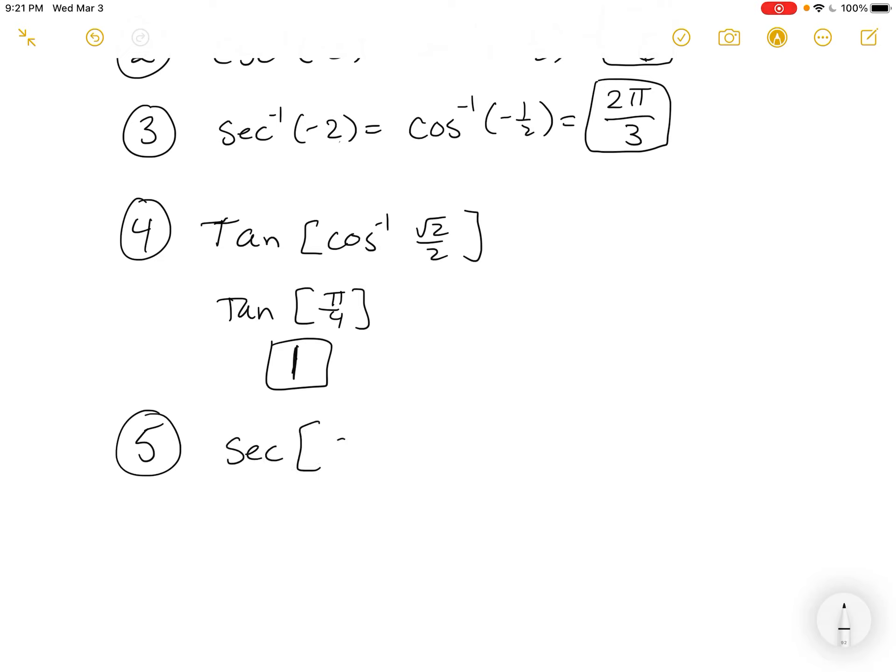Secant of sine inverse of the same, root 2 over 2, but this one's negative. So, the sine inverse of negative root 2 over 2 is the same as asking yourself, what angle do I take the sine of and get root 2 over 2? Well, we know that that's pi over 4. Now, it would be pi over 4, but it needs to be negative, so it's going to be negative pi over 4.